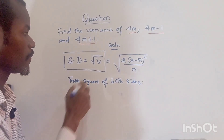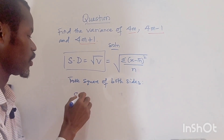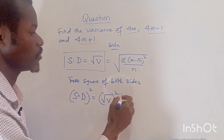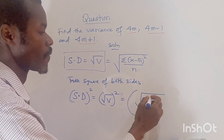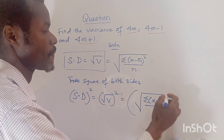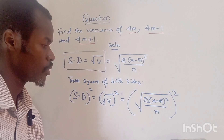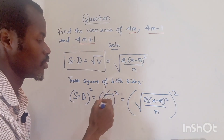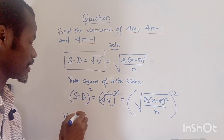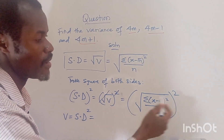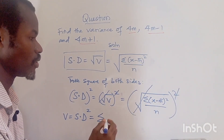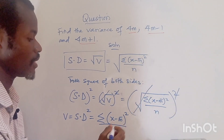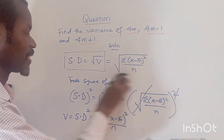If we square both sides — squaring the square root of variance cancels the radical — our variance is equal to the standard deviation squared. By this formula, we are left with the summation of (x minus the mean) squared, divided by n.